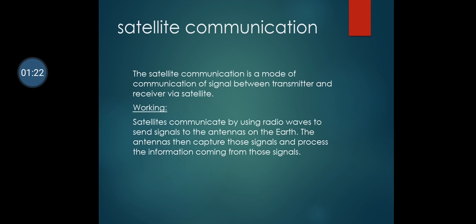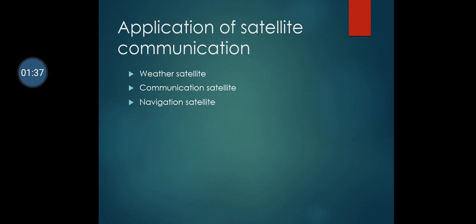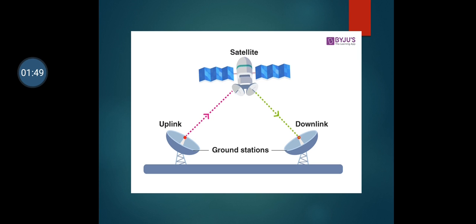The working of satellite communication is: satellites communicate by using radio waves to send signals to the antennas on earth. The antennas then capture those signals and process the information coming from those signals. Satellite communication is used in weather satellites, communication satellites, and navigation satellites.